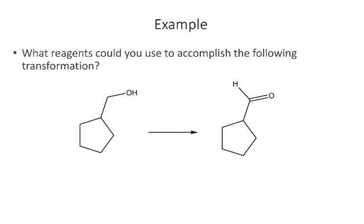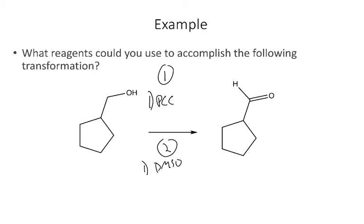In this example, the reactants and products are given and we need to identify the reagents. Starting with a primary alcohol but stopping at the aldehyde, we don't want chromic acid because that would go all the way to the carboxylic acid. There are two ways to achieve this: first, we could use the chromium reagent PCC; second, we could do a Swern oxidation using DMSO, COCl₂, and then triethylamine.